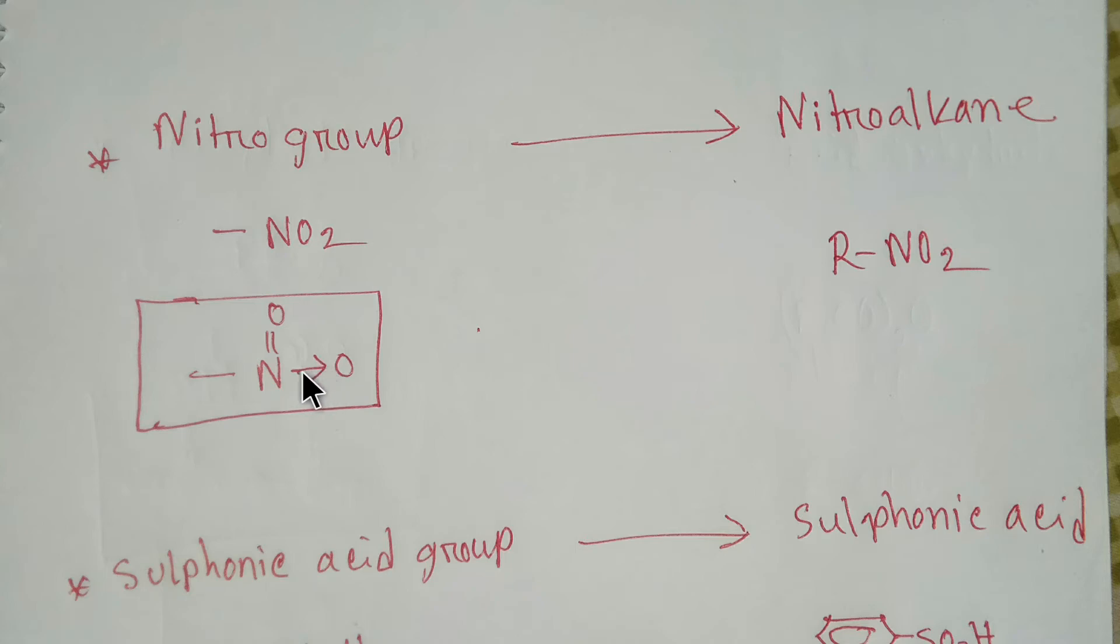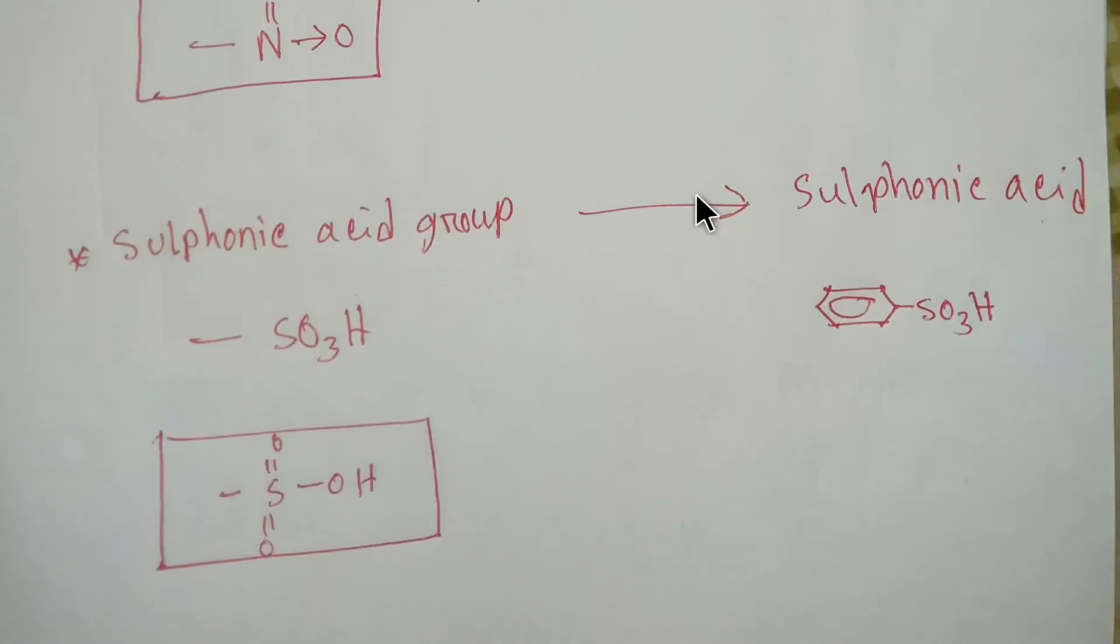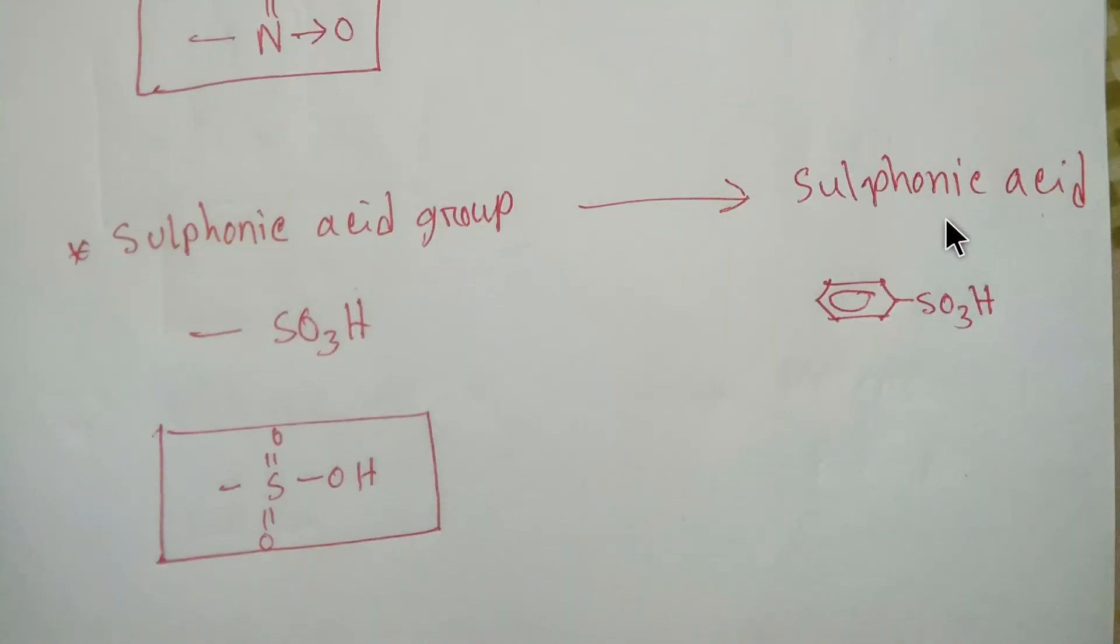Sulfonic acid: if one hydrogen is replaced by sulfonic acid group from benzene, then we will get sulfonic acid. The functional group of sulfonic acid is sulfonic acid group, this is SO3H.